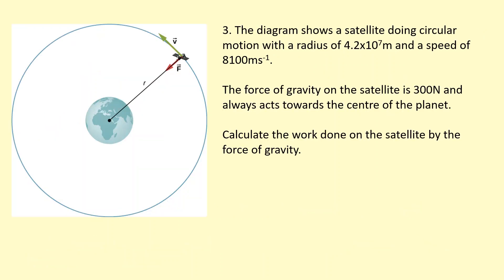The diagram shows a satellite doing circular motion with a radius of 4.2 times 10^7 meters and a speed of 8,100 meters per second. The force of gravity on the satellite is 300 Newtons and is always back toward the center of the planet.